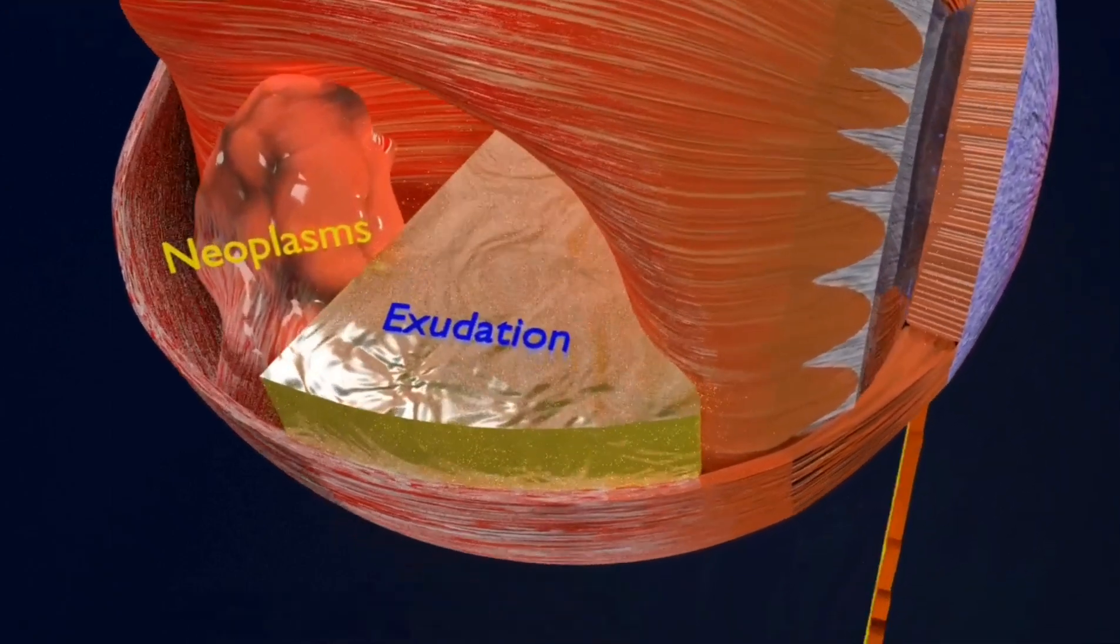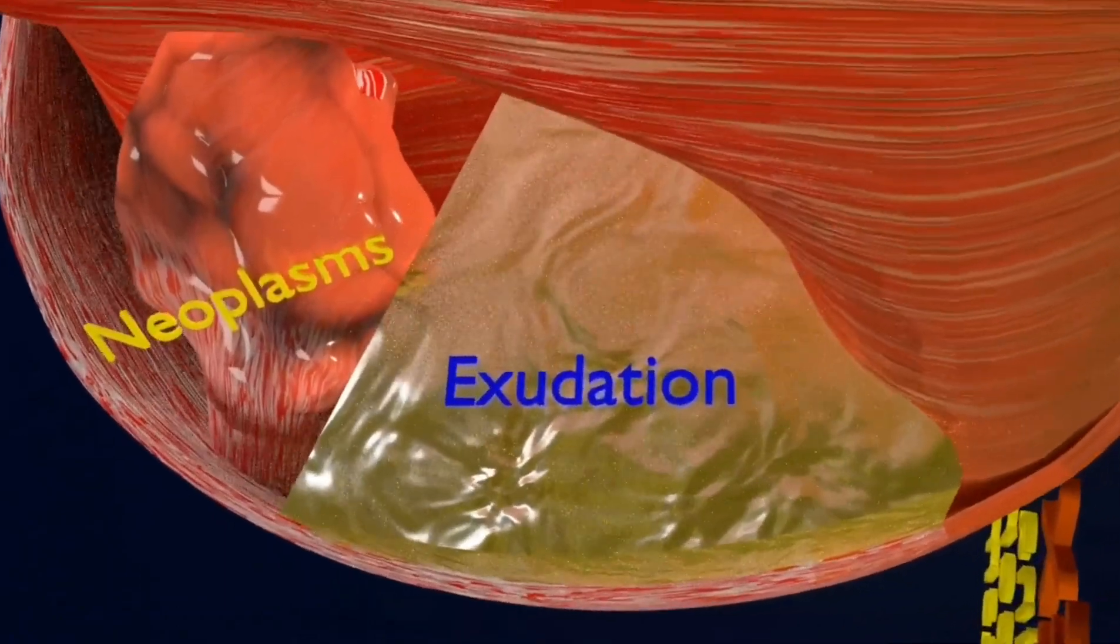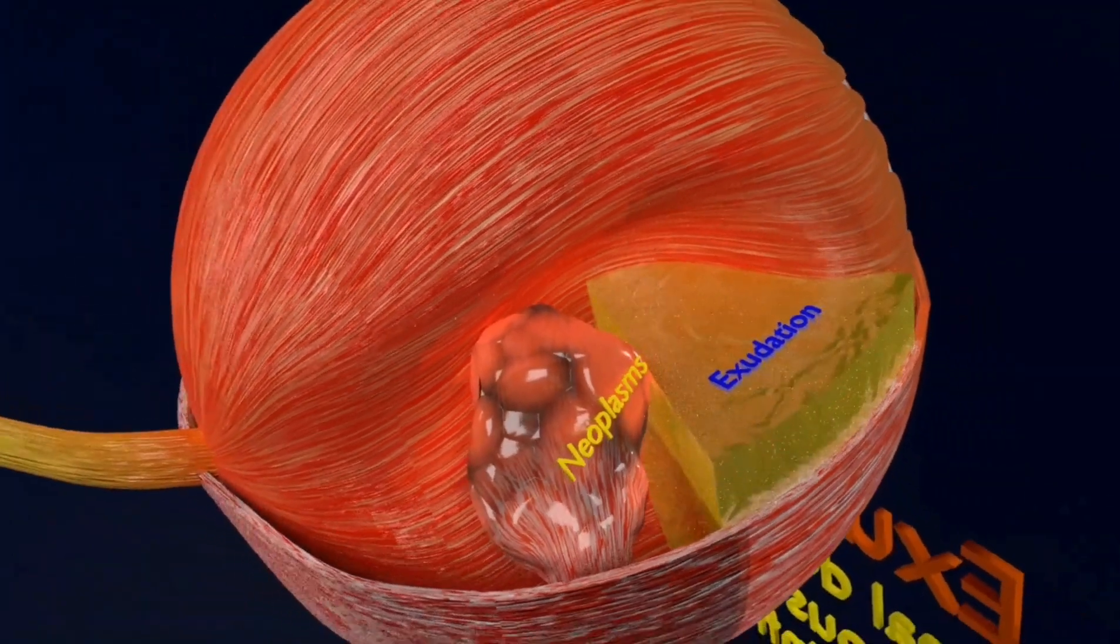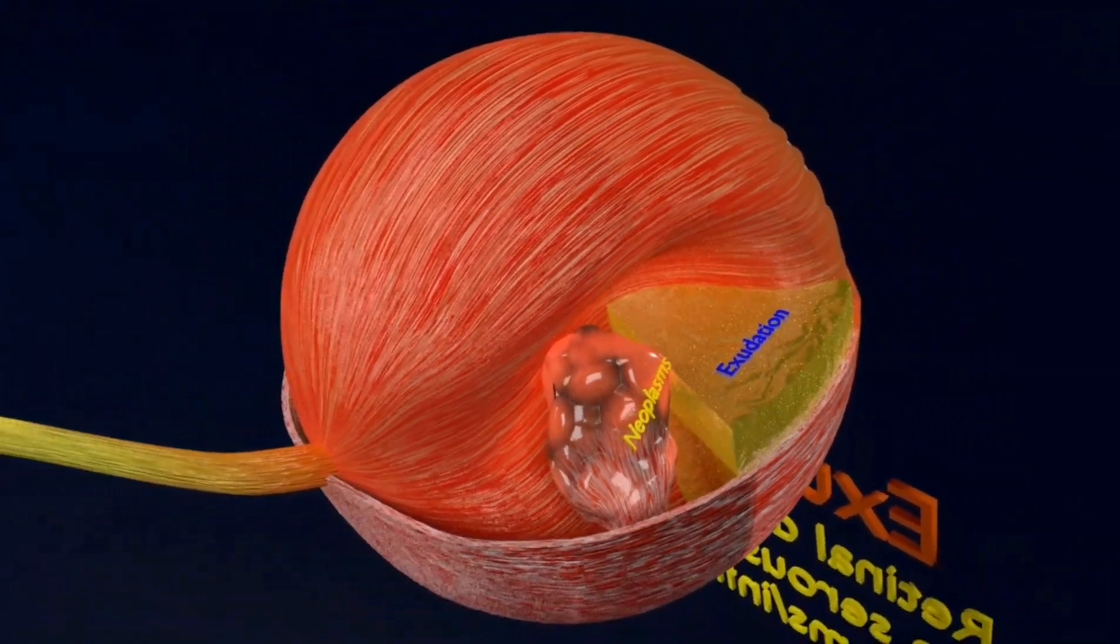Here you can see that detachment can be caused by exudation or neoplasms. Remember one thing, retinal detachment and retinal tear are very much different.